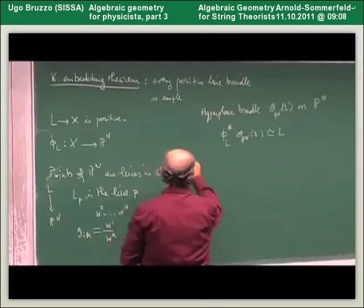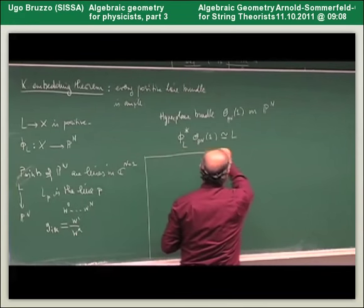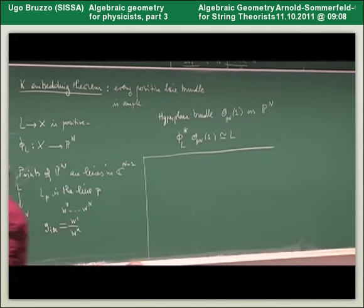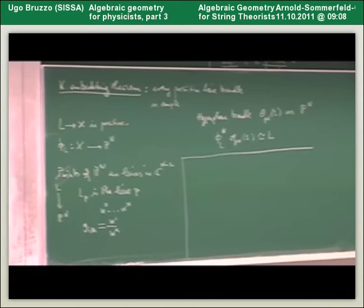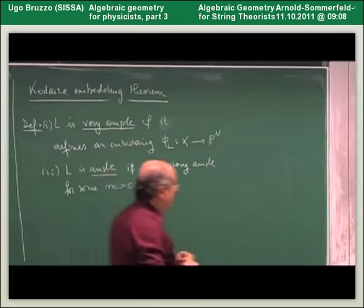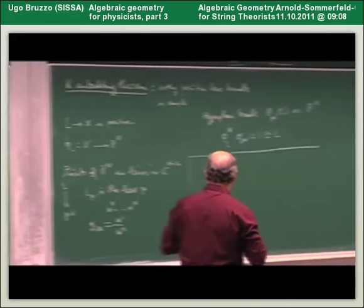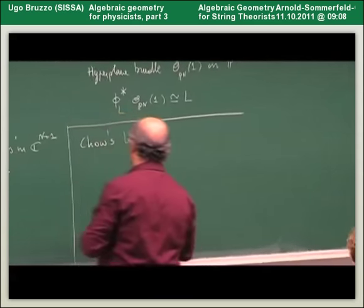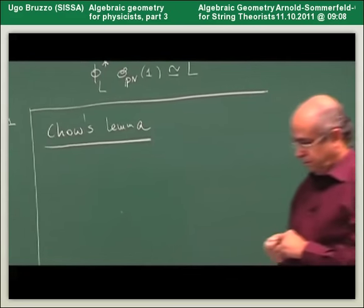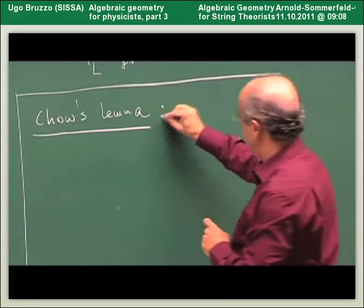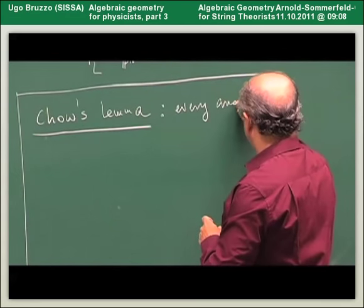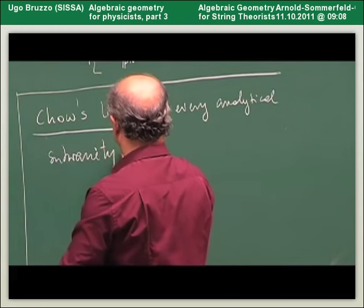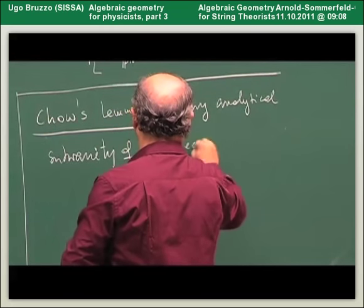Now we can state why we are so interested in the possibility of embedding a complex manifold into a projective space. We like to find line bundles which yield projective embeddings. There is the important result which is Chow's Lemma, which says the following: every analytical sub-variety of a projective space is algebraic,